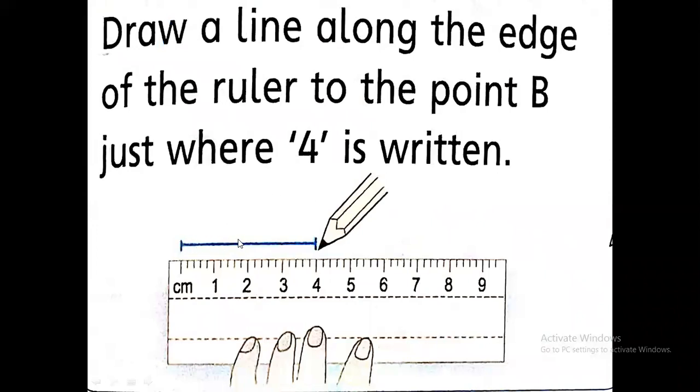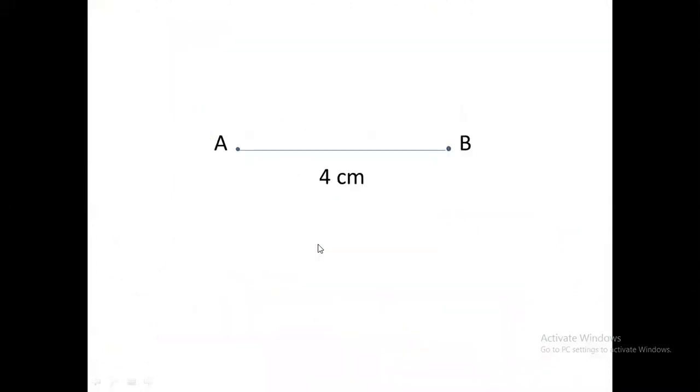Now, draw a line along the edge of the ruler. You have to join this part A and B, hold the ruler firmly and draw this line A to B, which is four centimeter long. So this is the line, which line segment which we have drawn. First point is A and the second point is B and the length of this line is four centimeter.